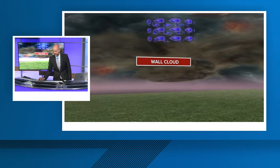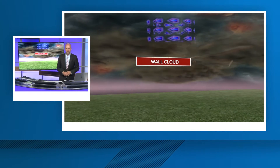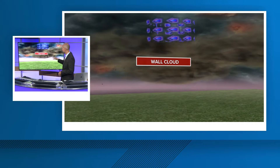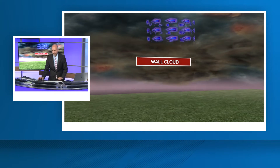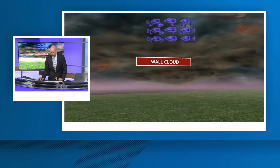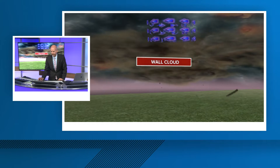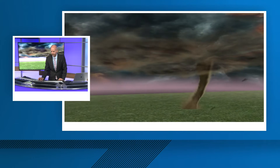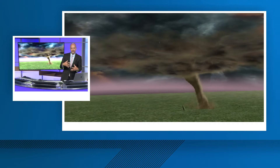The first thing that lowers is the wall cloud. You see that little lowering, and it can even be rotating — sometimes it is, sometimes it isn't. That lowering is what we call the wall cloud, and then the tornado will drop out of that.